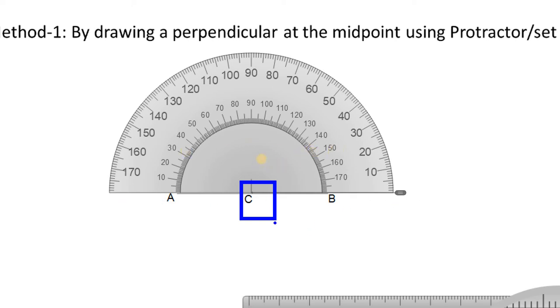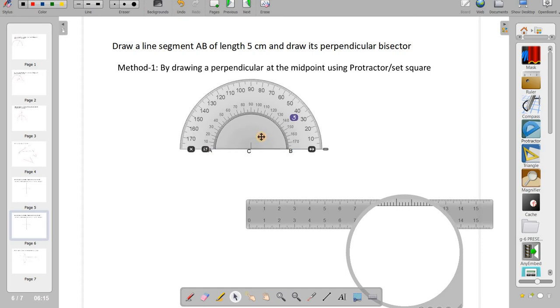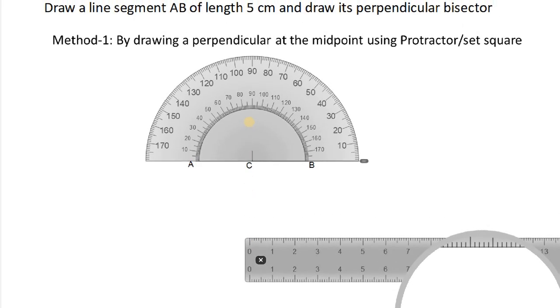Now, we can start measuring. But the protractor needs to come a little down. Because that line should not be visible. So, I'll just arrange it now. Yeah. Now, we can see it. Now, it is exactly arranged correctly.